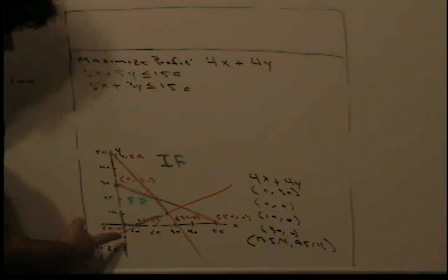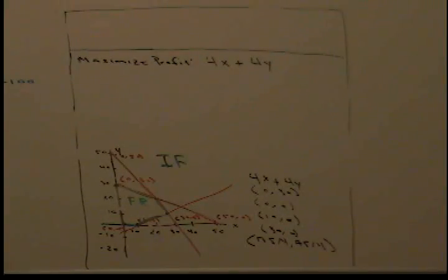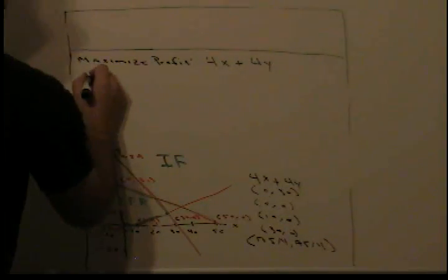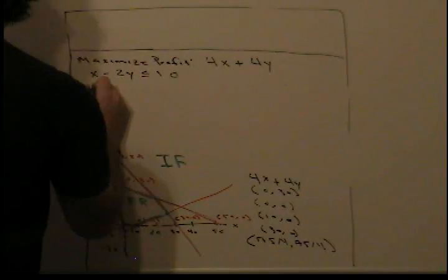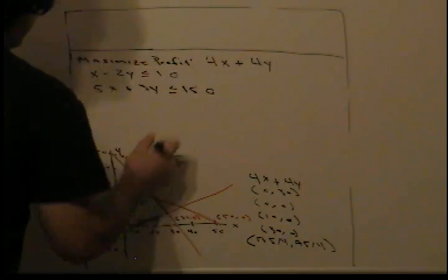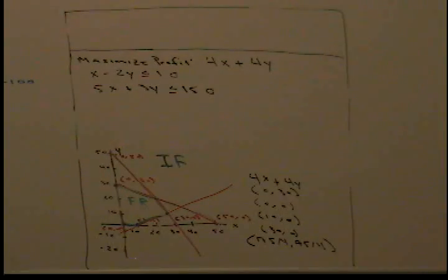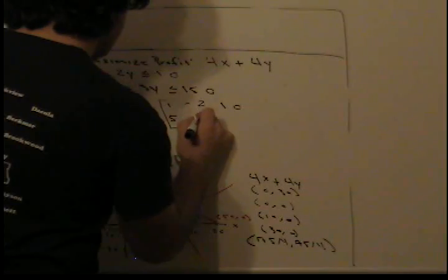Now we have one more matrix to solve. We find this solution by finding the intersection of two more constraints. Those two constraints are x minus 2y is less than or equal to 10, and 5x plus 3y is less than or equal to 150. The intersection of these two constraints gives us the remaining corner point. We put this in a matrix: [1, -2 | 10] and [5, 3 | 150].